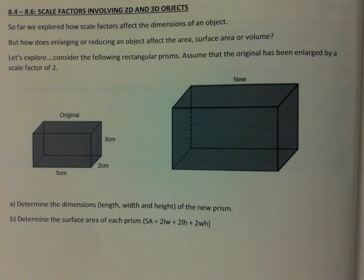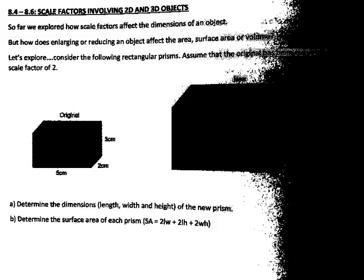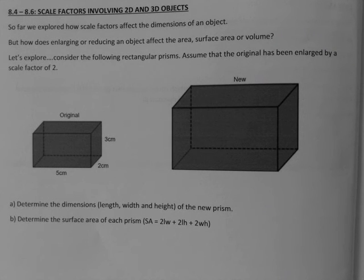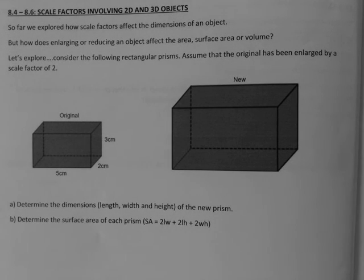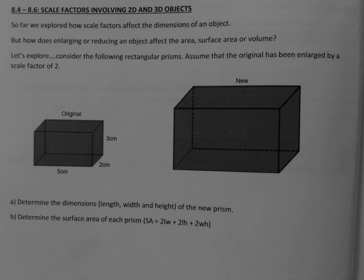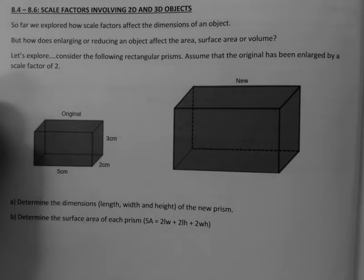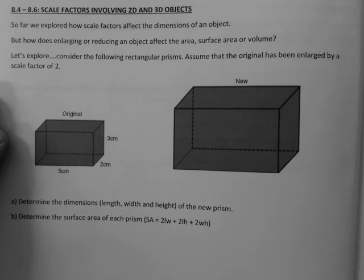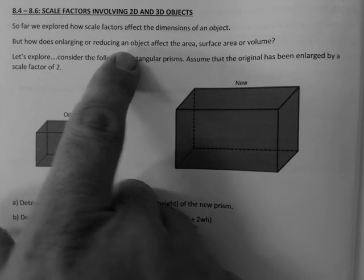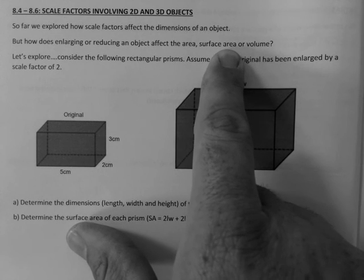Scale factors involving 2D and 3D objects. So far we've explored how scale factors affect the dimensions of an object, but how does enlarging or reducing an object affect the area, surface area, or volume? Let's explore. Consider the following rectangular prisms. Assume that the original has been enlarged by a scale factor of two.